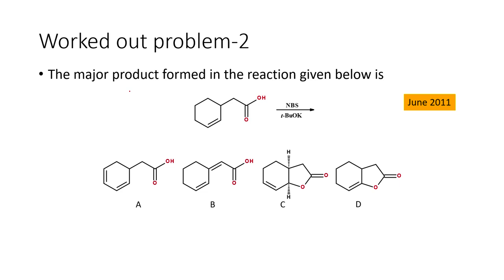The second problem asks for the major product of a similar reaction. The starting material is the same, but the reagents differ: here we have NBS (N-bromosuccinimide) in the first step, and in the second step a very strong base, potassium tert-butoxide. In the previous case we used iodine/potassium iodide and milder sodium carbonate. This combination will give a different type of product.